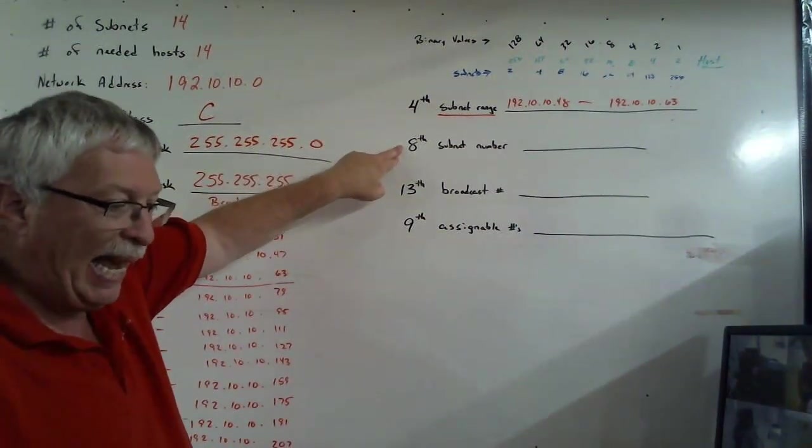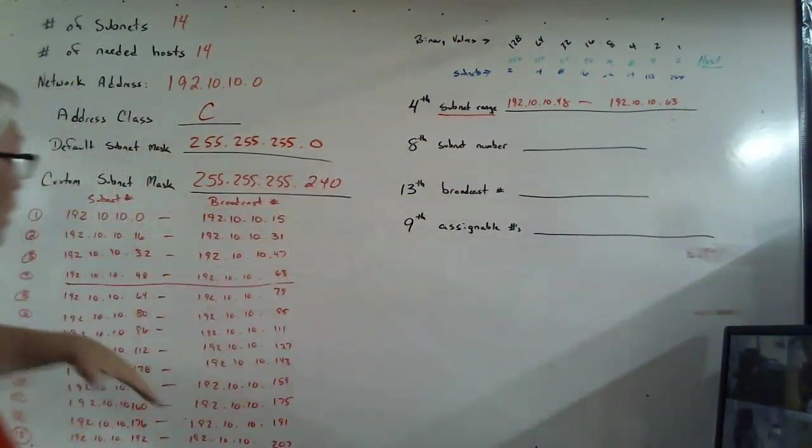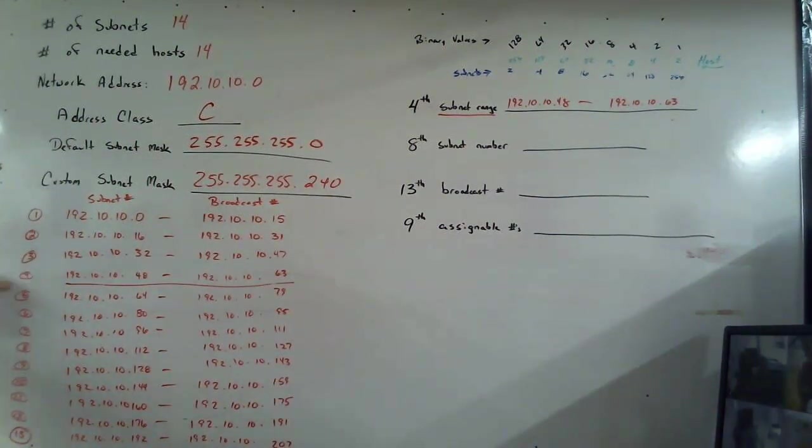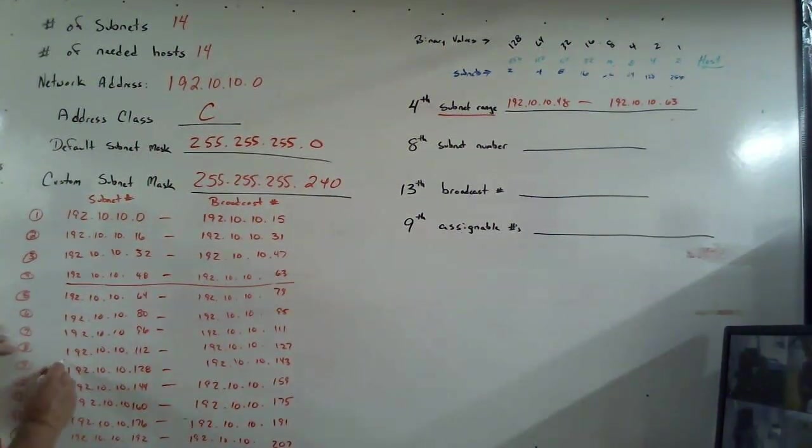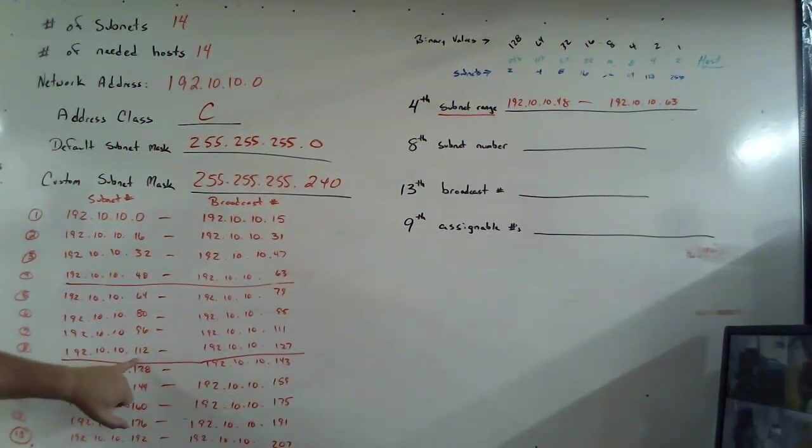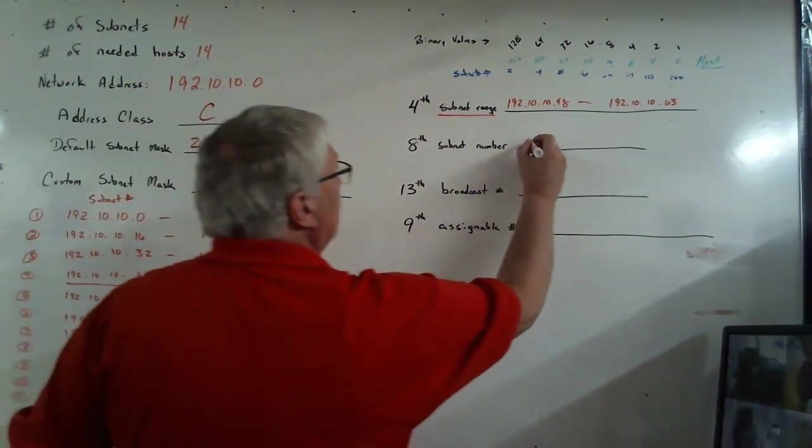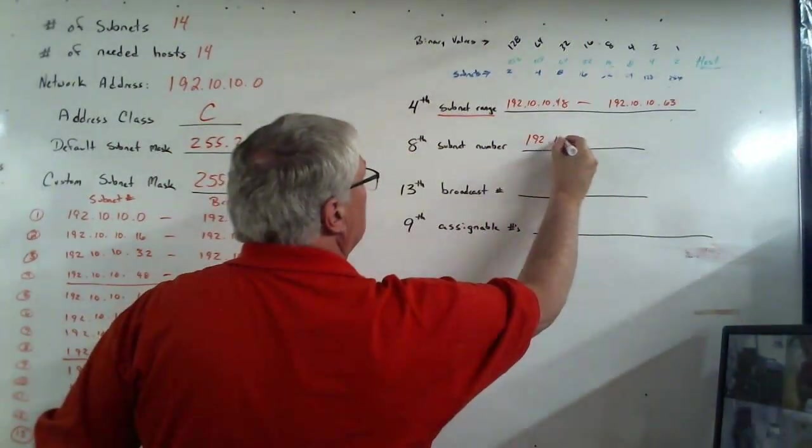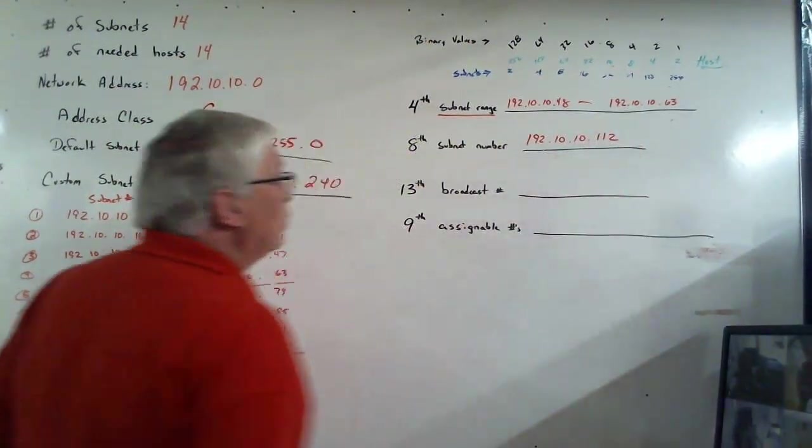The next question wants to know, what is the eighth subnet? So I have to find the eighth. One, two, three, four, five, six, seven, eight. Remember, the subnet is the very first number. So that's the only thing I want up there. And that's 112. 192.10.10.112.